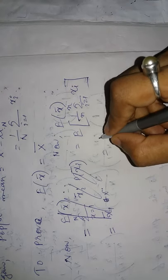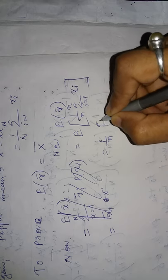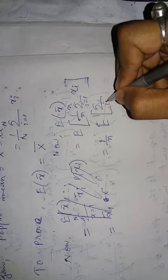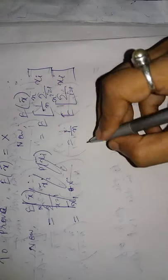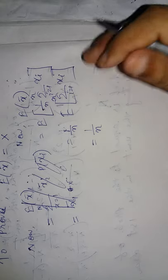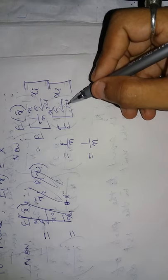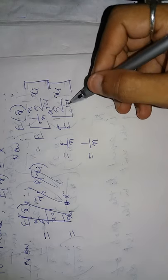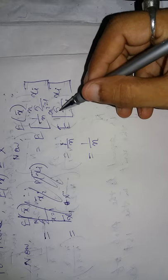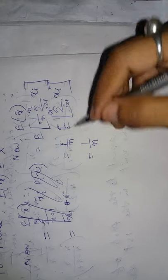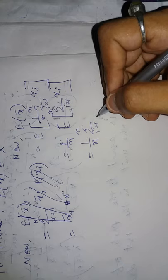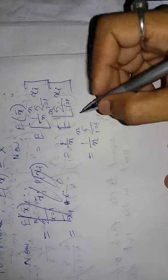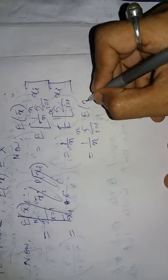1 by n is constant, so I can take it outside. After that, summation will be constant. So 1 by n times expectation of summation xi. Summation is there, but it's constant. So summation i from 1 to n, expectation of xi.